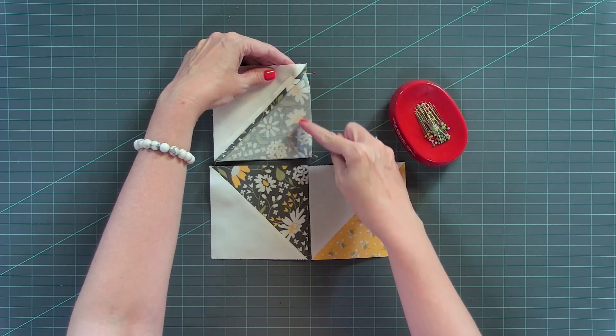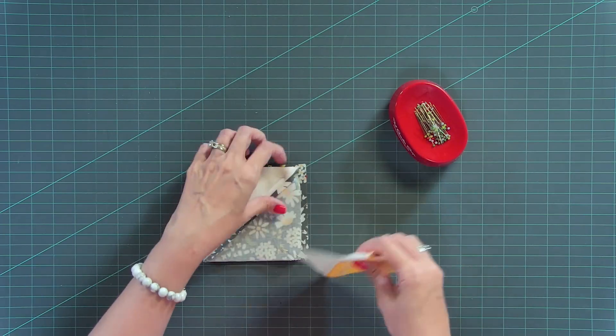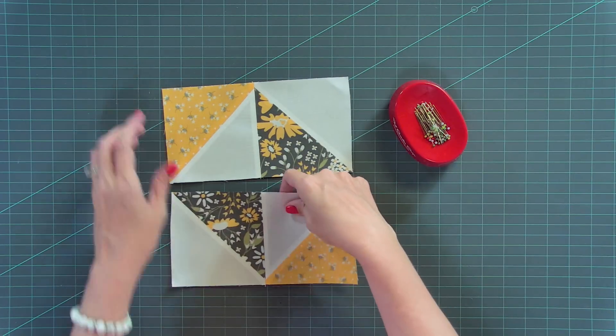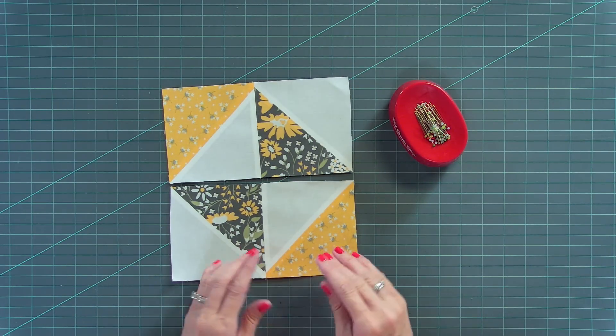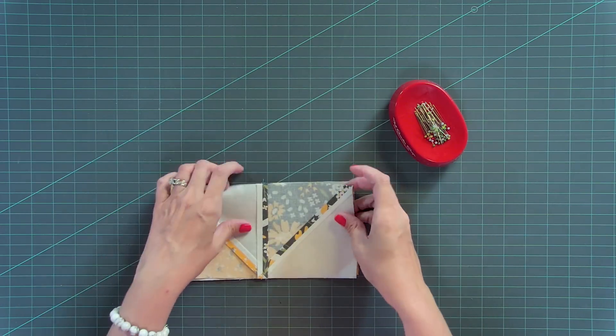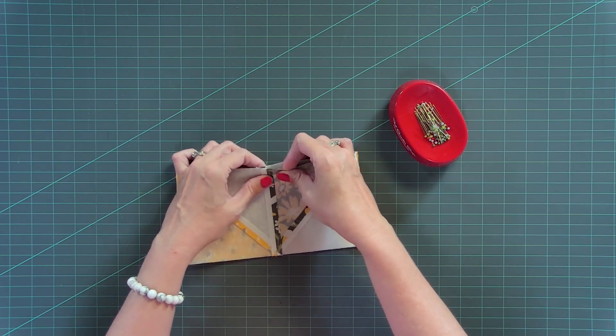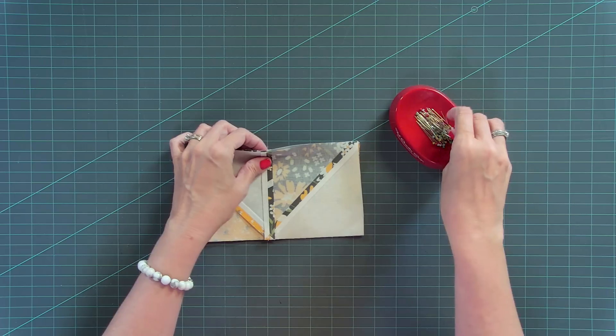And you're gonna do that. You're gonna stitch down a quarter inch seam. And then you will have two units that look like this. And from here, you're gonna also pin. From here, you'll take this, get the whites lined up, pin here.